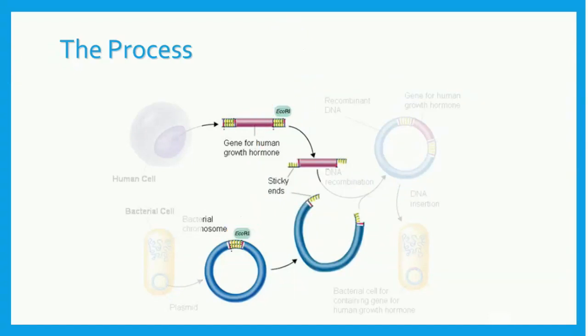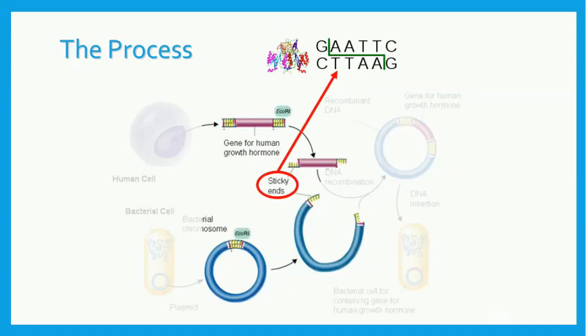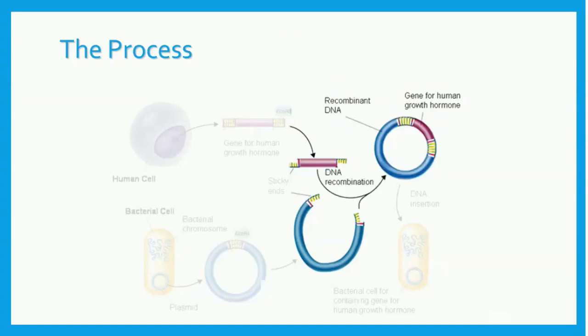The cuts from the enzyme create sticky ends, or overhangs, in the DNA. The sticky ends on the human gene fit into the sticky ends on the plasmid, because they were cut by the same type of enzyme. The sticky ends of both the plasmid and the gene come together, forming a complete plasmid. This process is called DNA recombination, and the plasmid product is recombinant DNA.